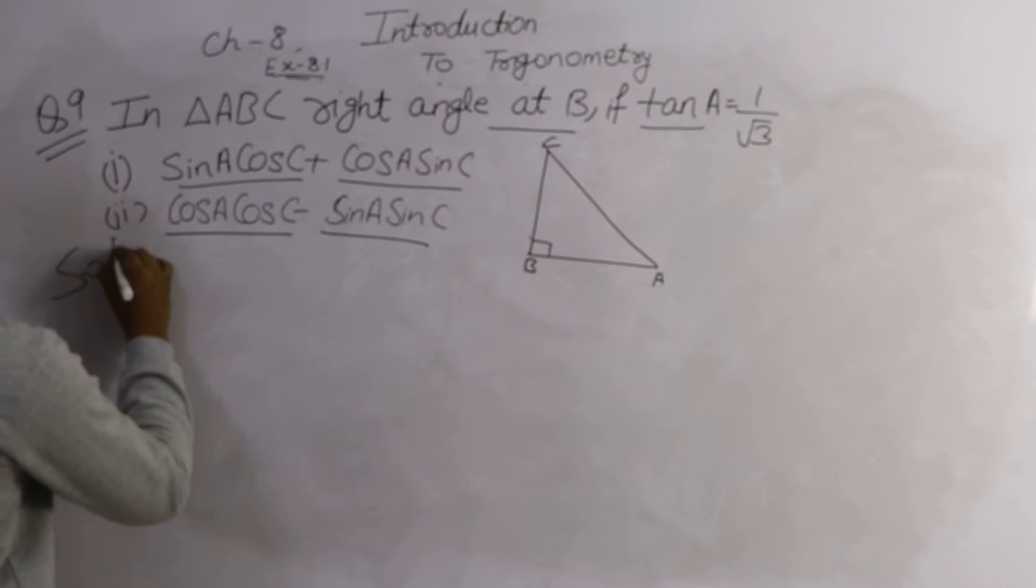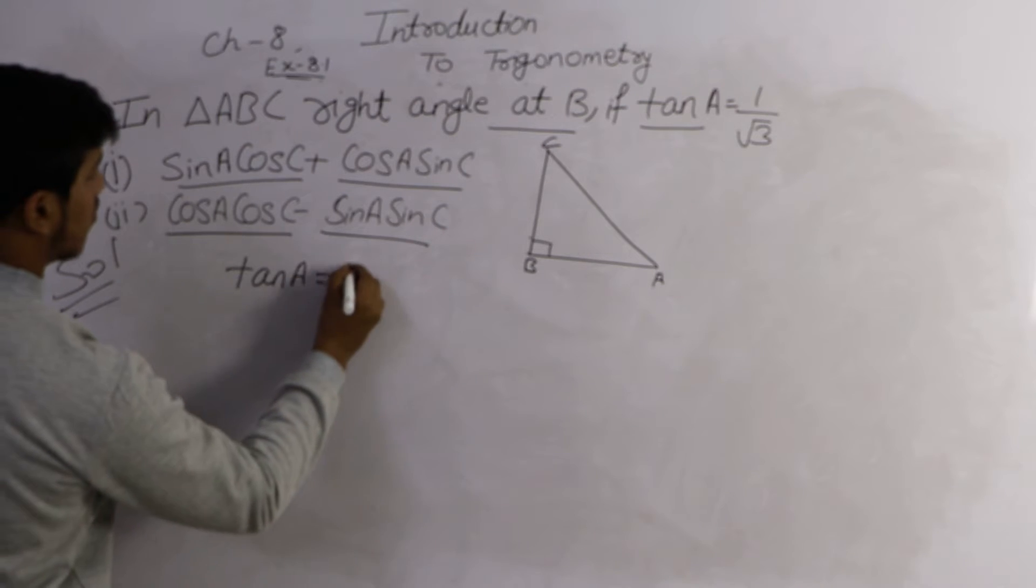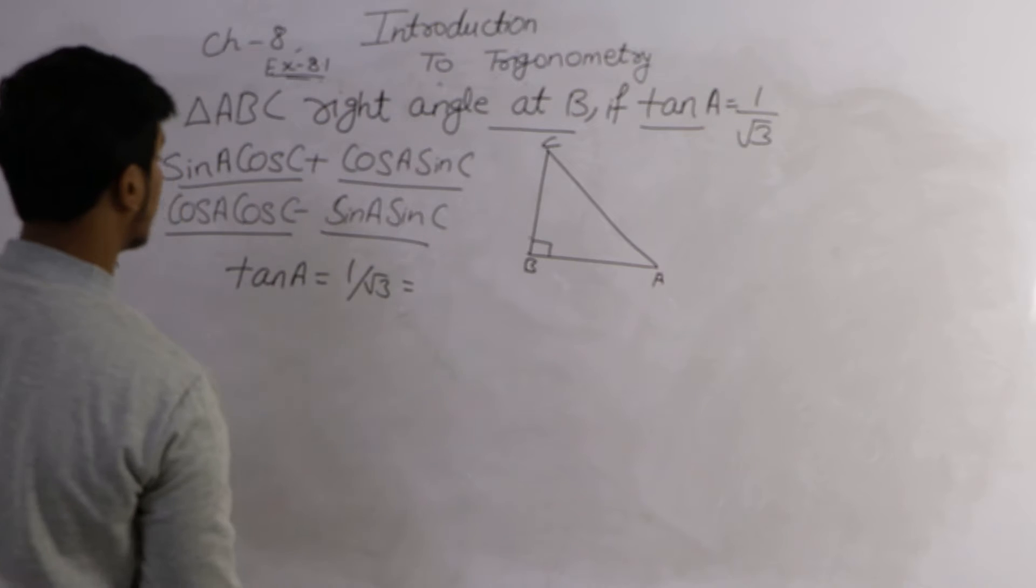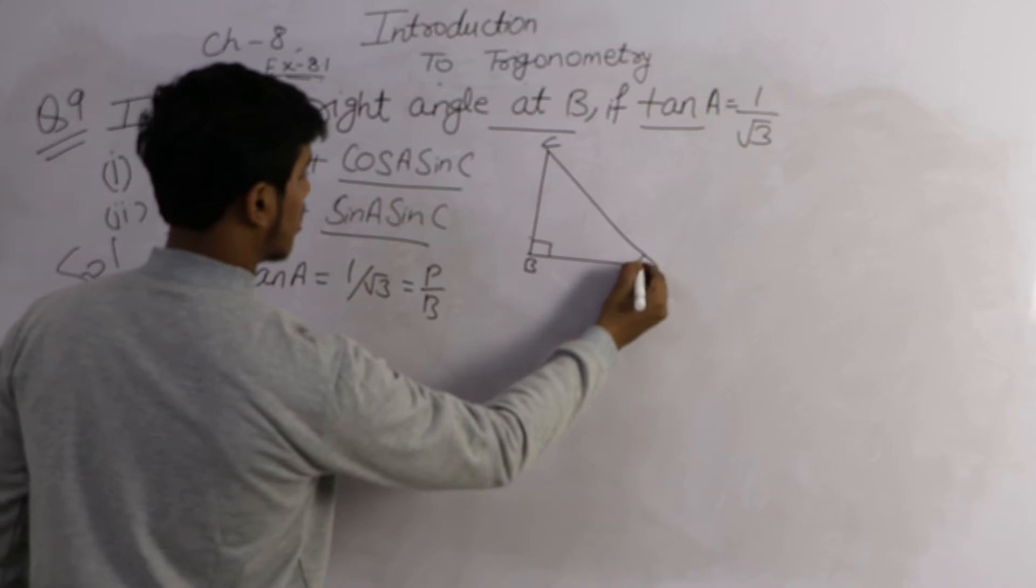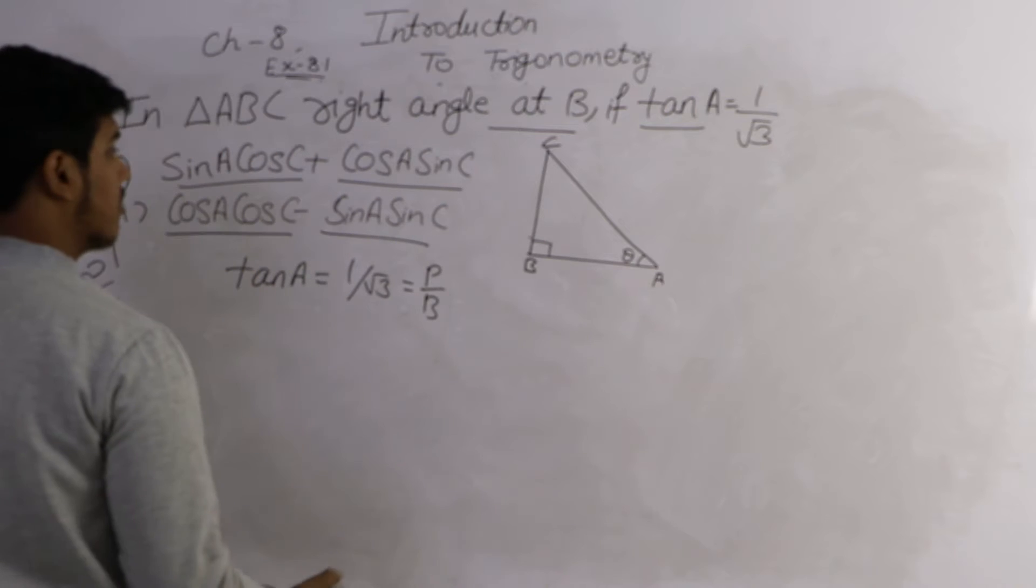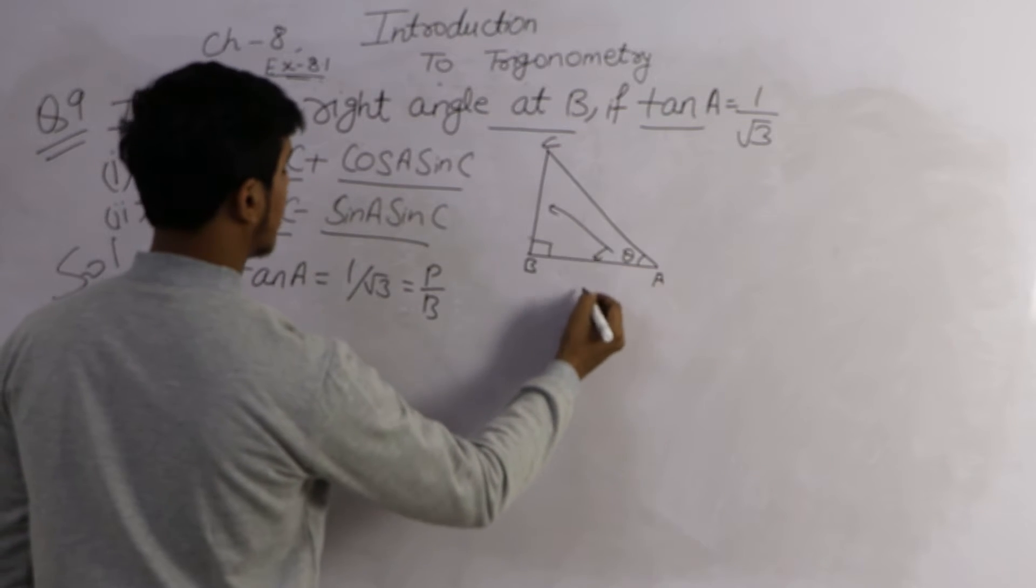Given tan A is equal to 1 by root 3. We know tan is perpendicular upon base. If theta is here, the perpendicular is opposite side and the adjacent side is base.